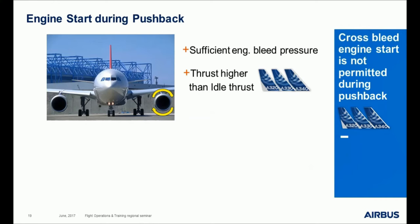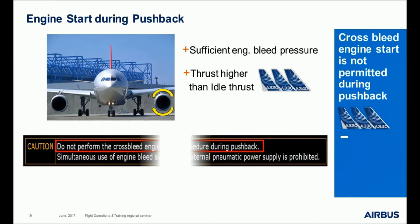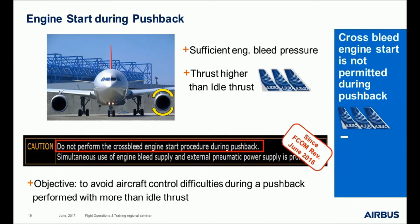Cross-bleed engine start is not permitted during pushback on A320, A330, and A340 aircraft. During a cross-bleed engine start, the engine bleed pressure of the running engine needs to be sufficiently high to start the other engine. On these aircraft, thrust may need to be significantly higher than idle to reach the correct bleed pressure level, and thrust shall not be higher than idle during pushback. The FCOM cross-bleed engine start procedure was modified in June 2016 to clearly explain that cross-bleed engine start is forbidden during pushback, preventing aircraft control difficulties with an engine providing more than idle thrust.